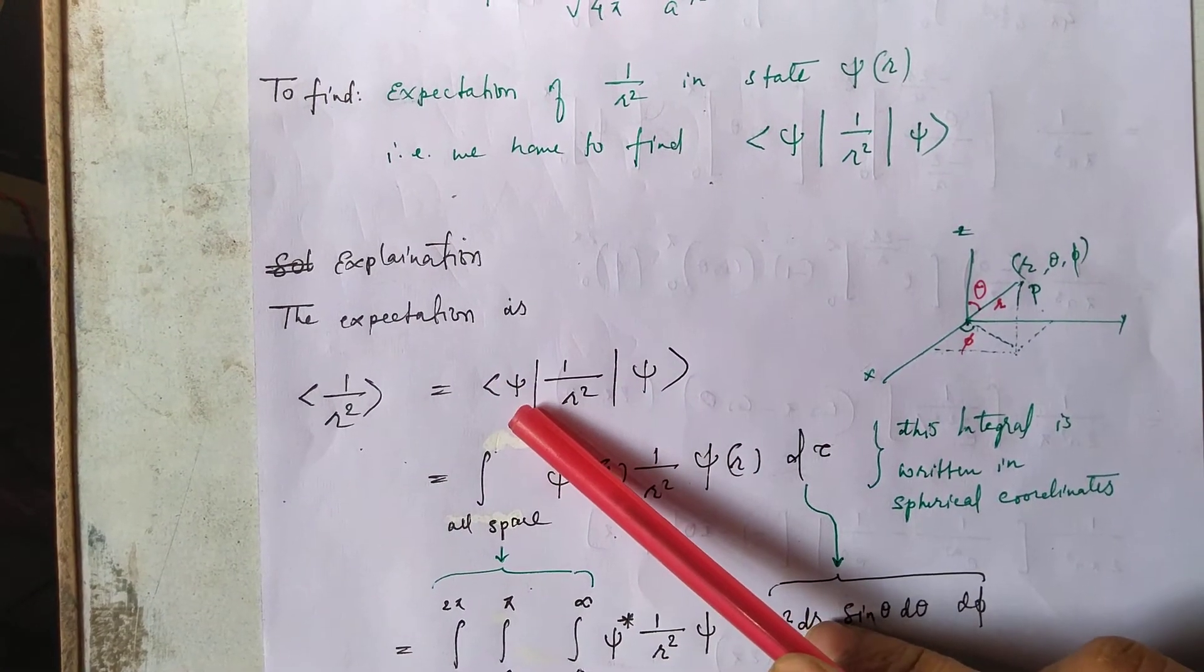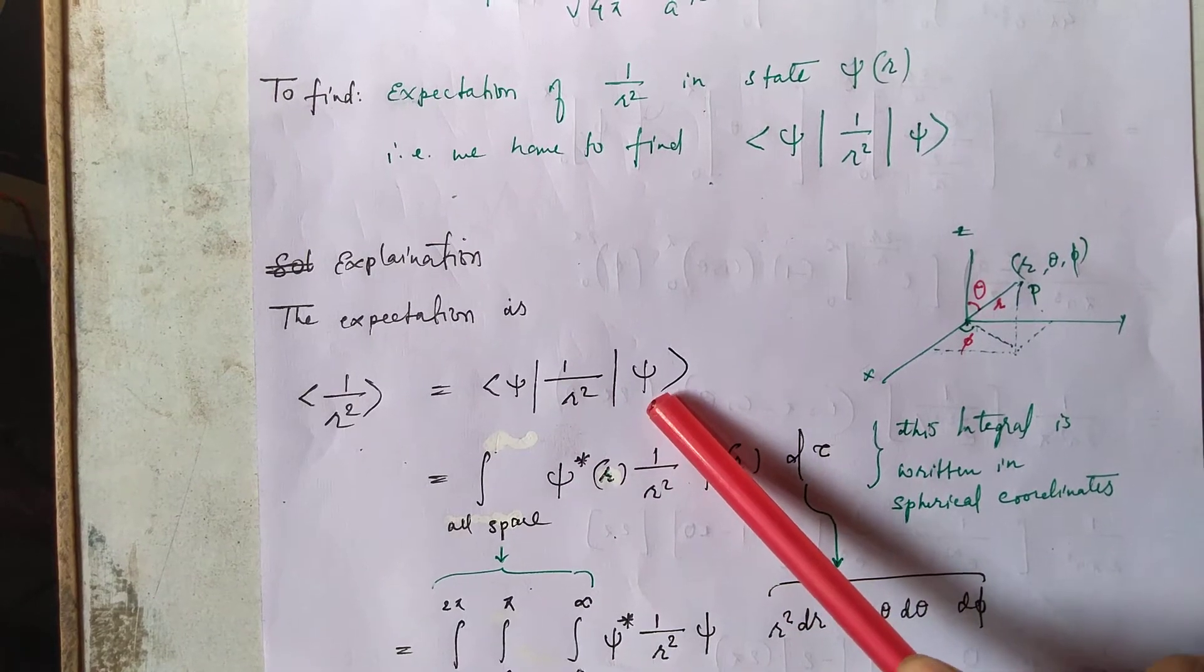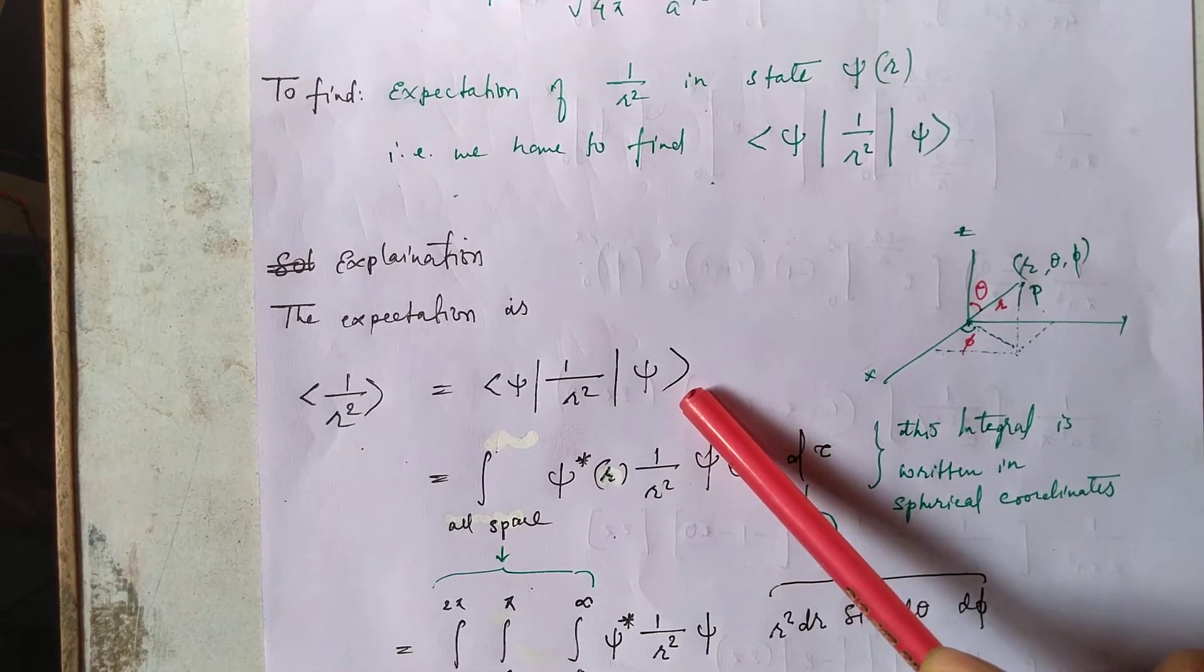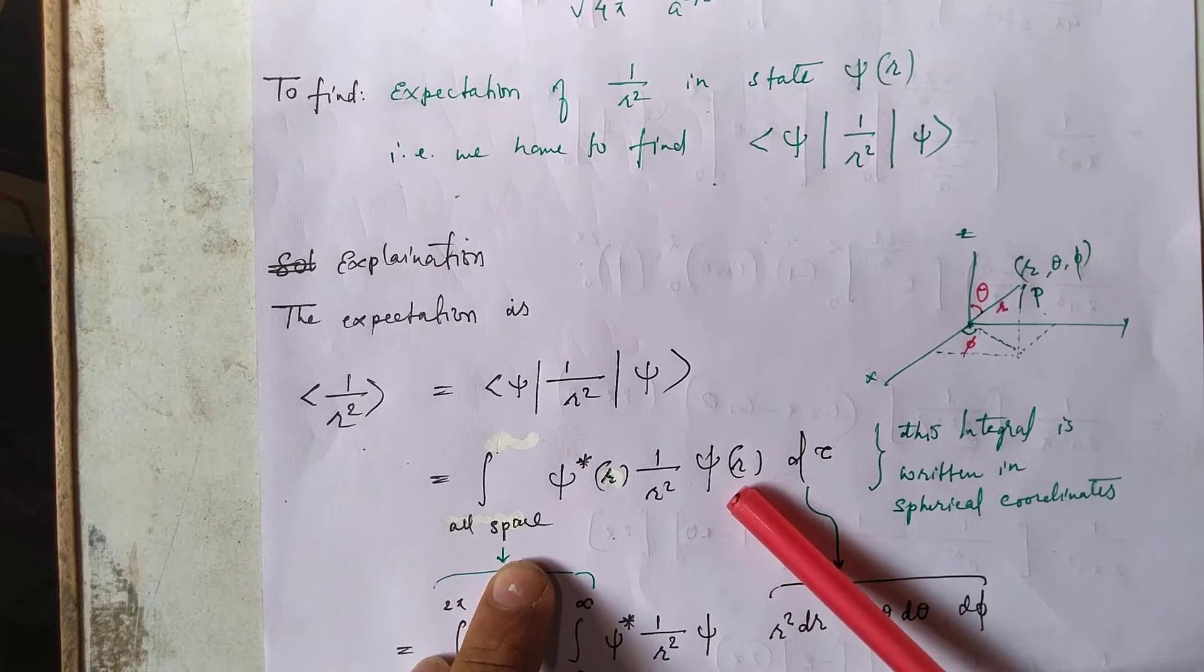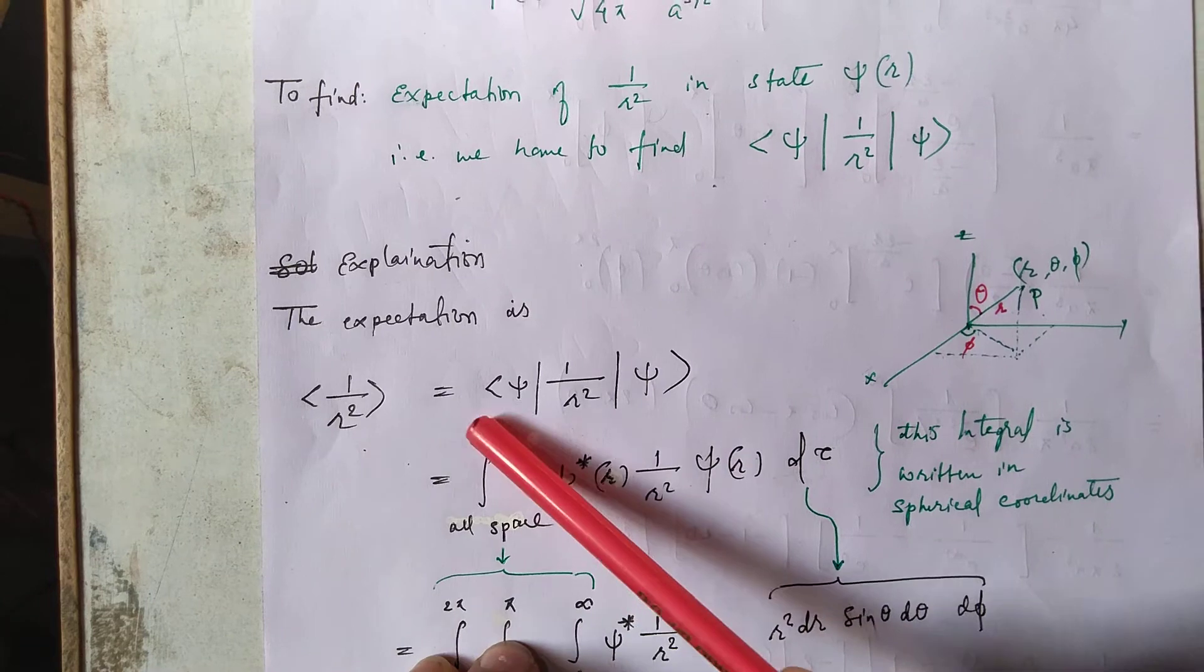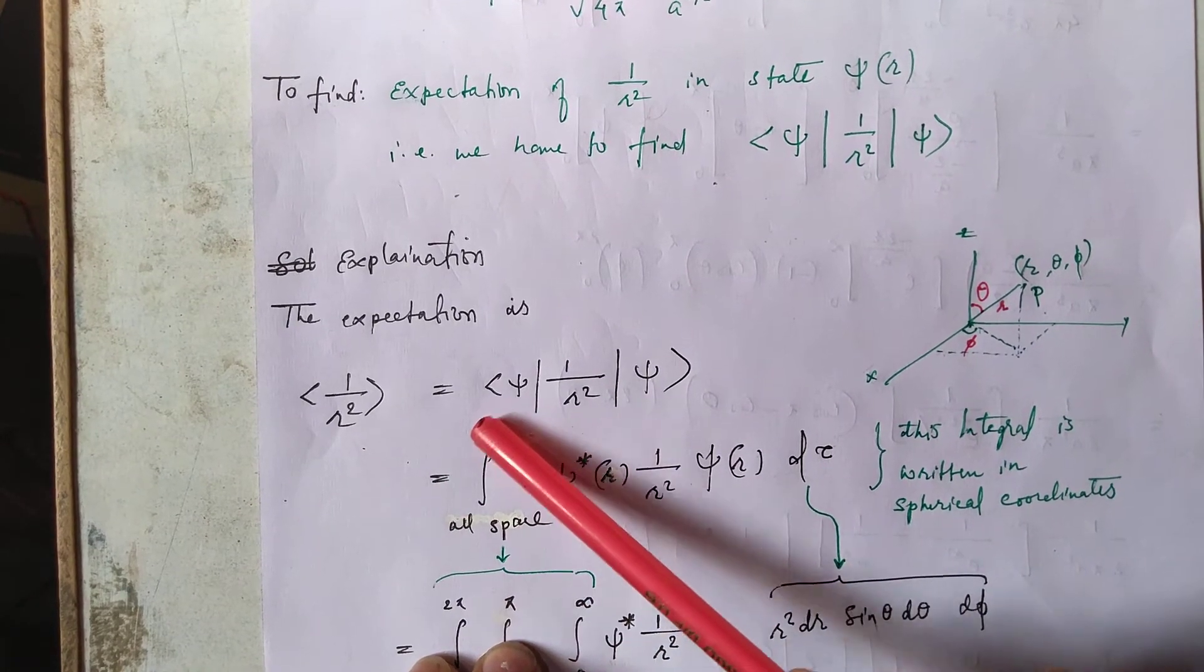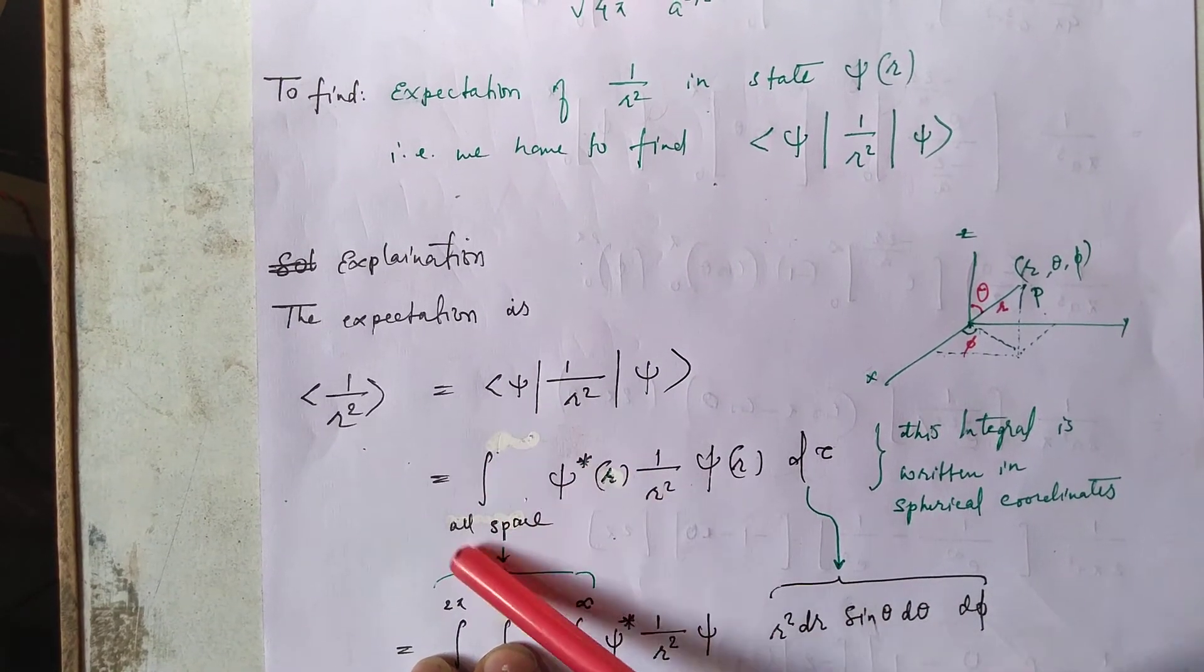The expectation is written here and this is written in bra-ket notation. Bra-ket notation can also be written in the integral form as you can see here. You can see that here the integration is over all the space.